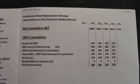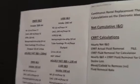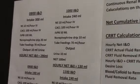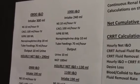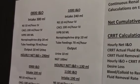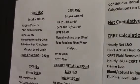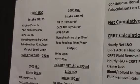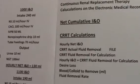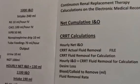Line number one, the hourly net I&O is 290. How did we derive at that number? I have developed an I&O flow sheet, which I will zoom into to show you at 8 a.m. The I&O intake was a total of 300 ml and the output was 10 ml. So subtracting the output of 10 ml from the intake of 300 ml, you get an hourly net I&O of 290 ml. You will place that figure in line number one, hourly net I&O.